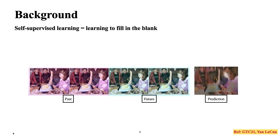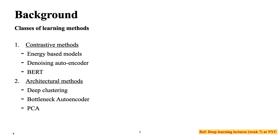Self-supervised learning is like learning to fill in the blanks. Here the first two images are from the past and the next two are from the future. For example, if you see this picture, there's not a big difference between past and future — if I'm looking towards you, I might move my head left or right with equal probability. The model tries to reduce mean square error loss, which is why we get a blurry predicted image. There are two main kinds of self-supervised learning: contrastive methods and architectural methods.